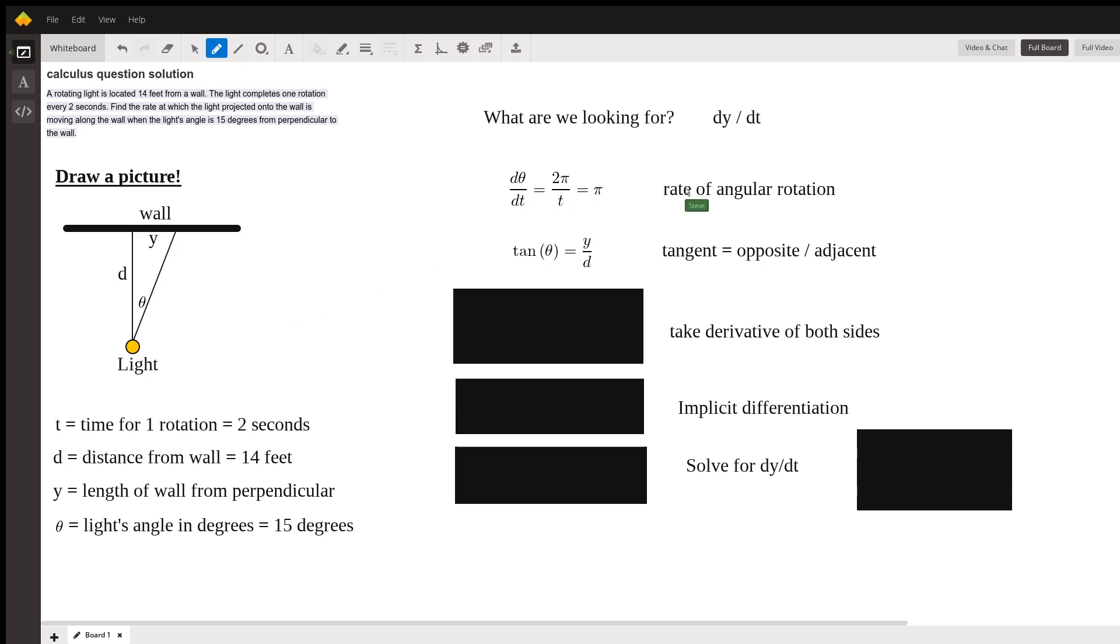Now given this triangle here, if I'm looking for dy/dt, we got to come up with a way to get that. If I look at this, I have theta here and d and y. I'm just going to write tan of theta. Tangent is opposite over adjacent, so relative to the light the opposite is y, the adjacent is d. Tan of that angle theta is y over d. I'm just starting to write some equations that I think are going to hopefully come together.